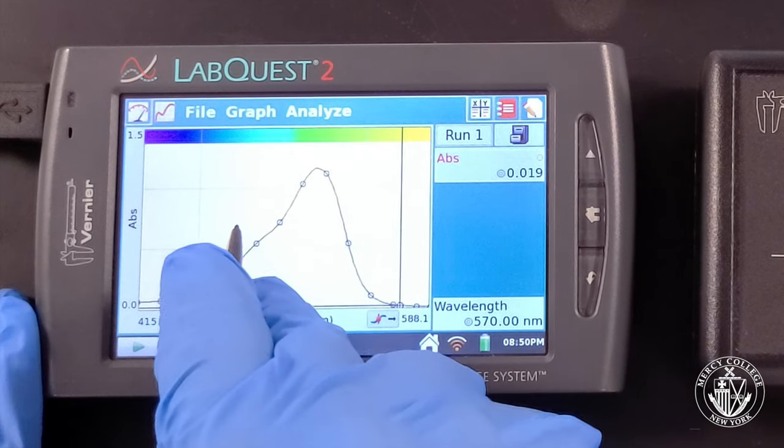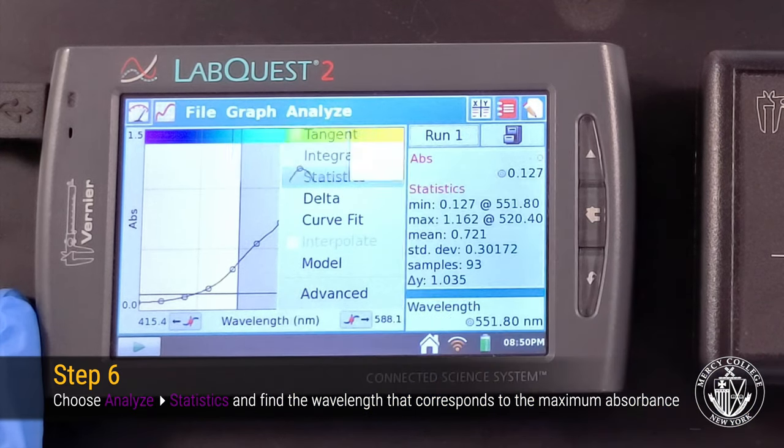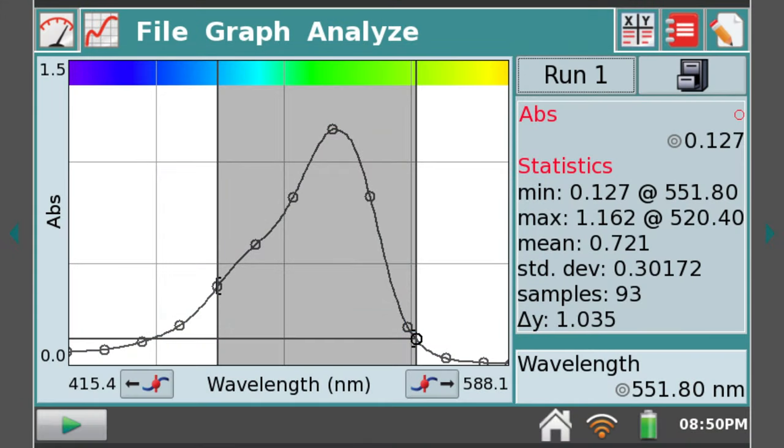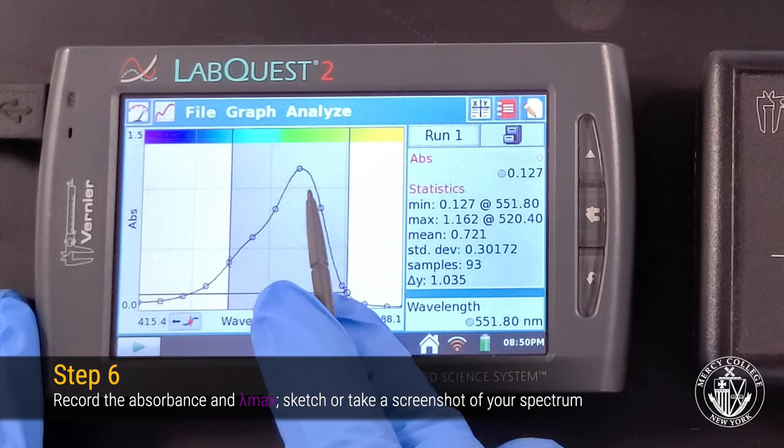To determine the wavelength of maximum absorbance, highlight your data and select Statistics from the Analyze menu. We're looking for the highest point on our absorbance spectrum. In the panel on the right, we can see that this corresponds to a max absorbance of 1.162 at a wavelength of 520.4 nanometers.